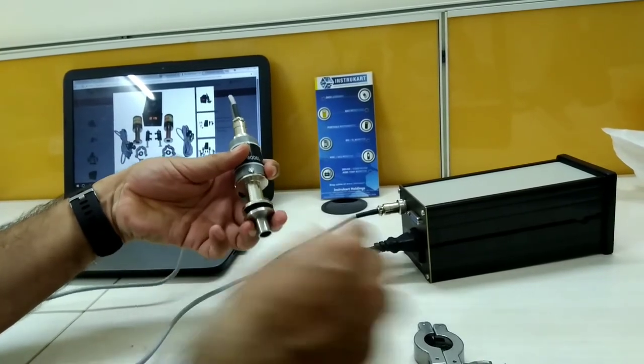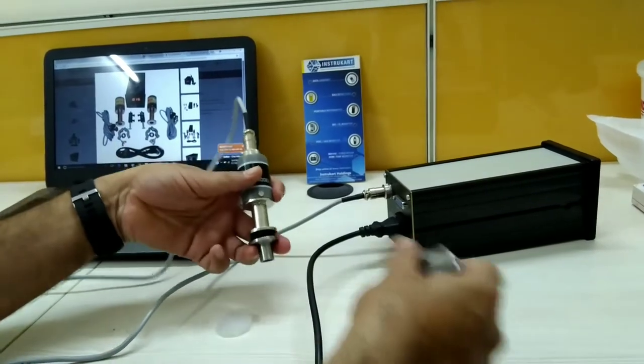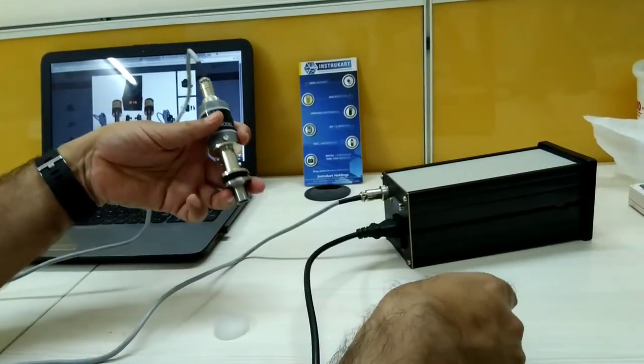And over this we are supposed to clamp the Pirani Gauge Head. I'll show you how that is done later.